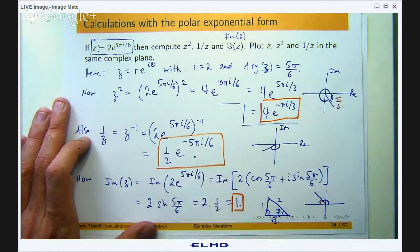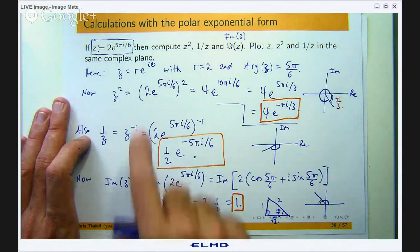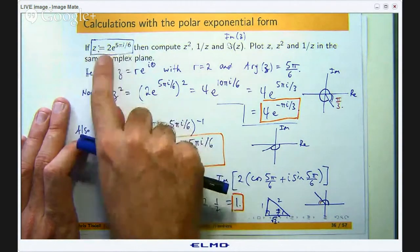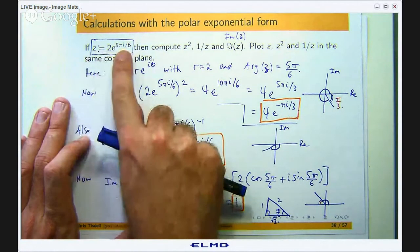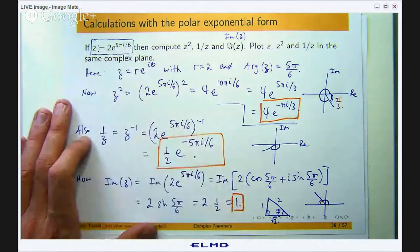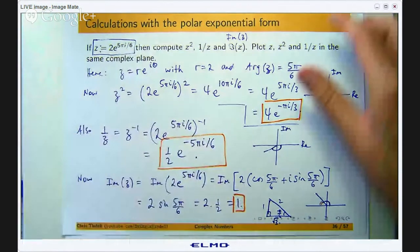And for plain old z we would go out 2 units and rotate 5π/6 in the clockwise direction. So let's do those. Here is one that I sort of started earlier.